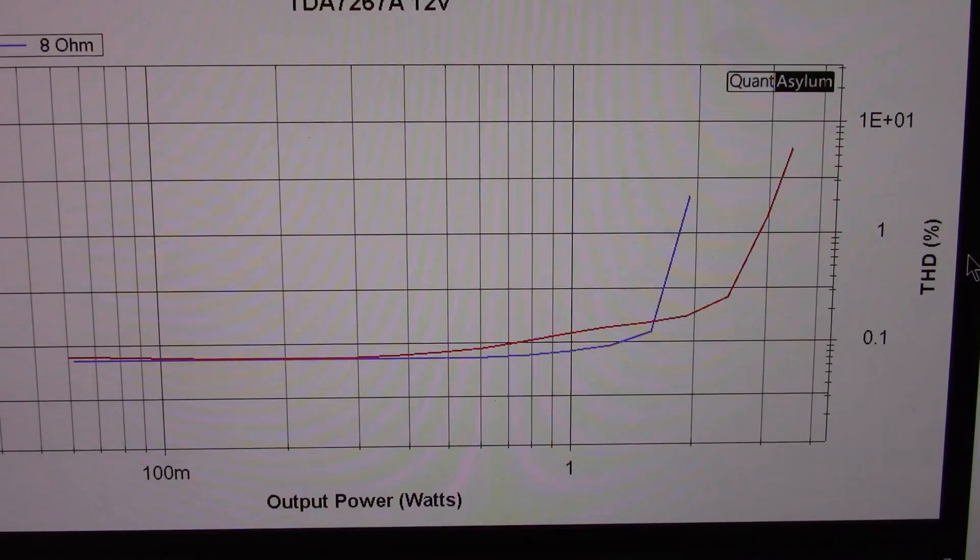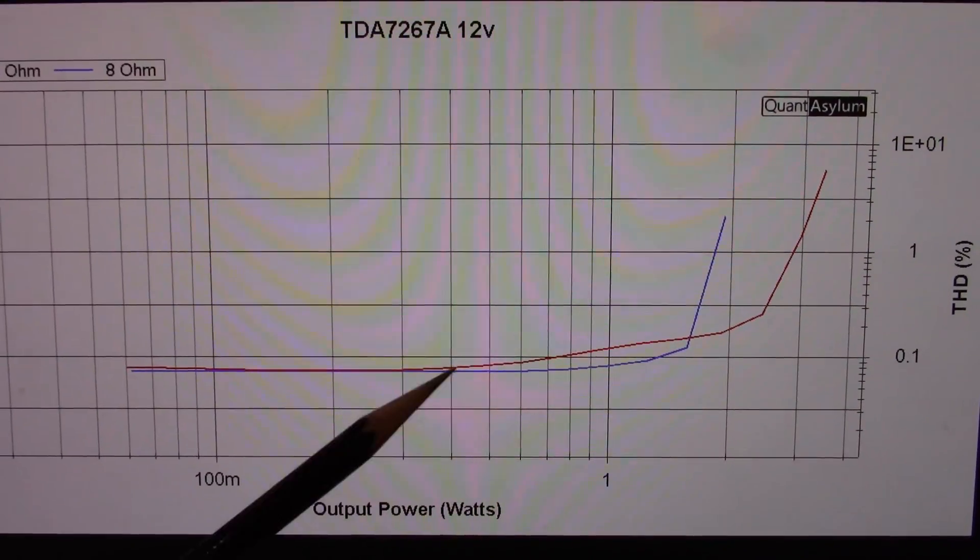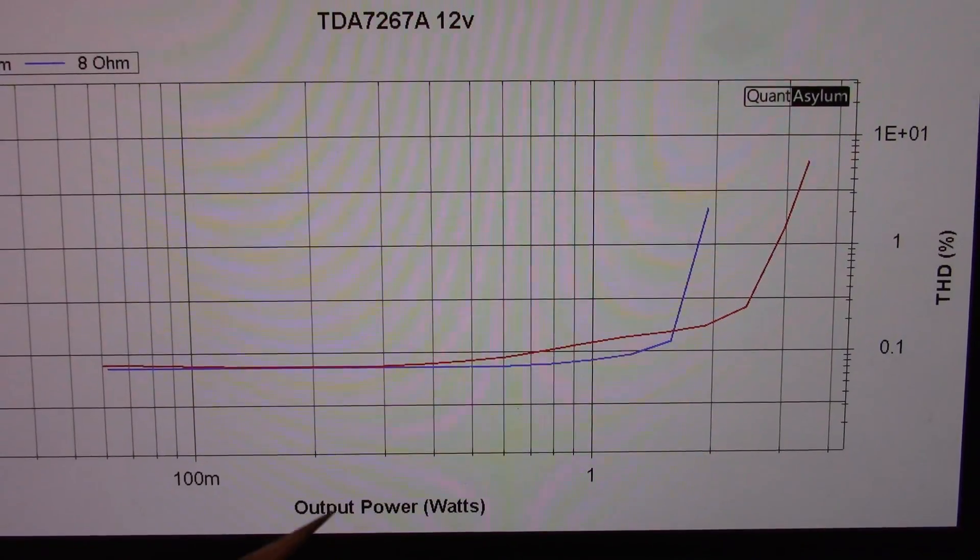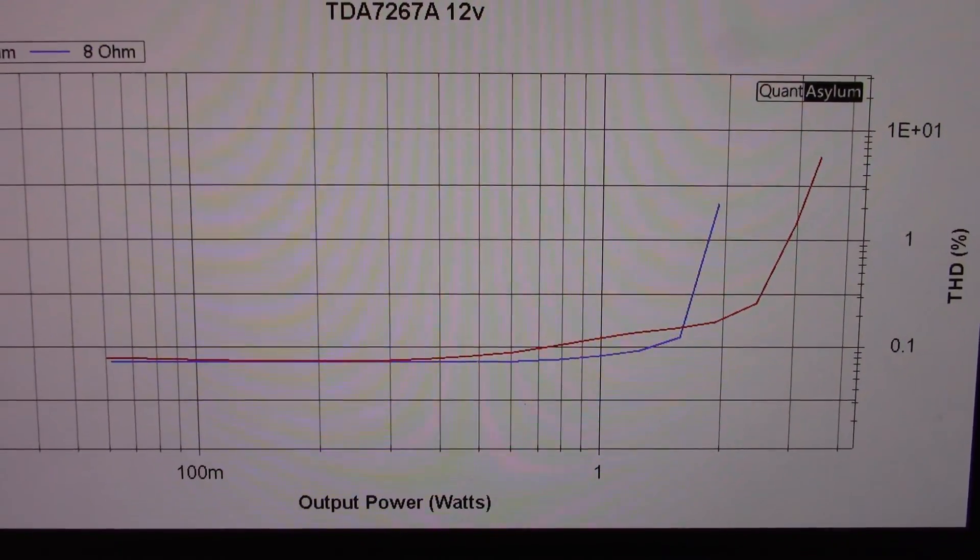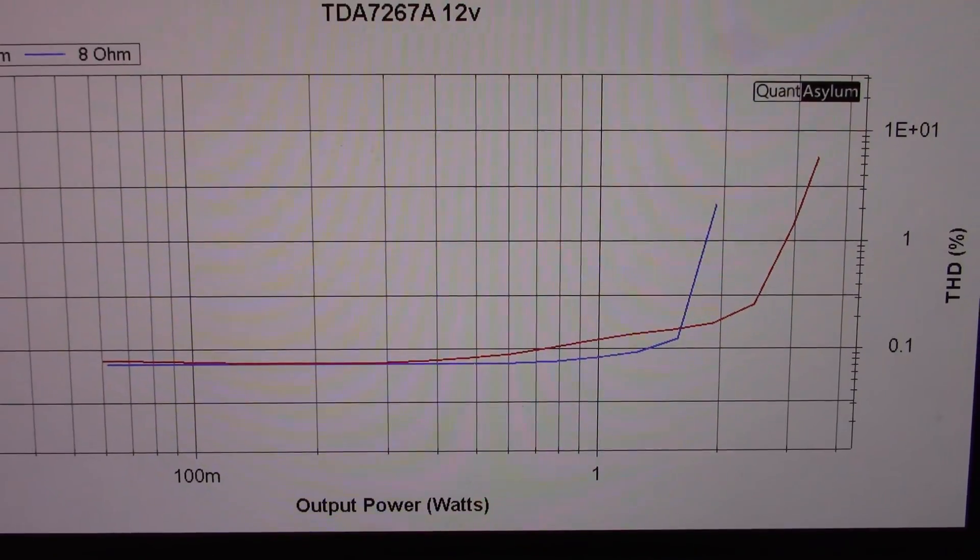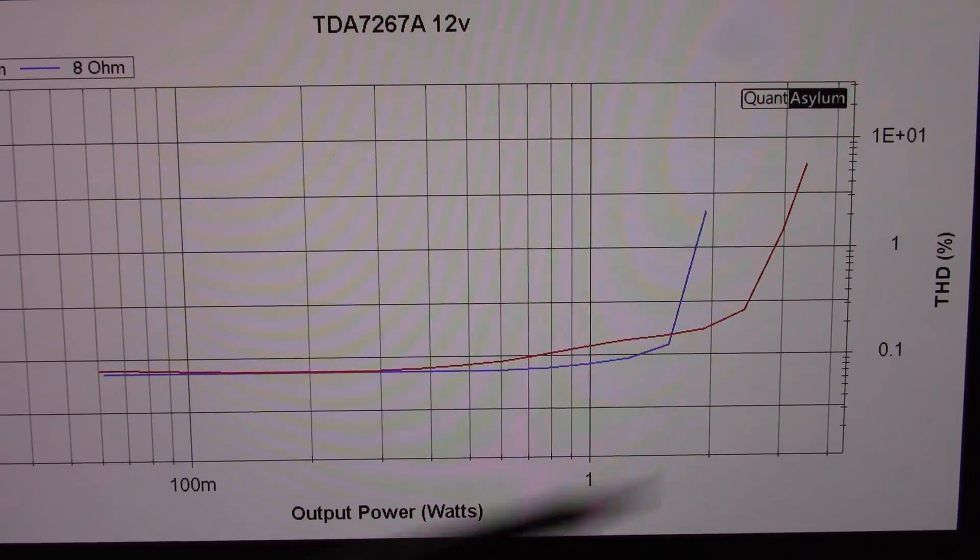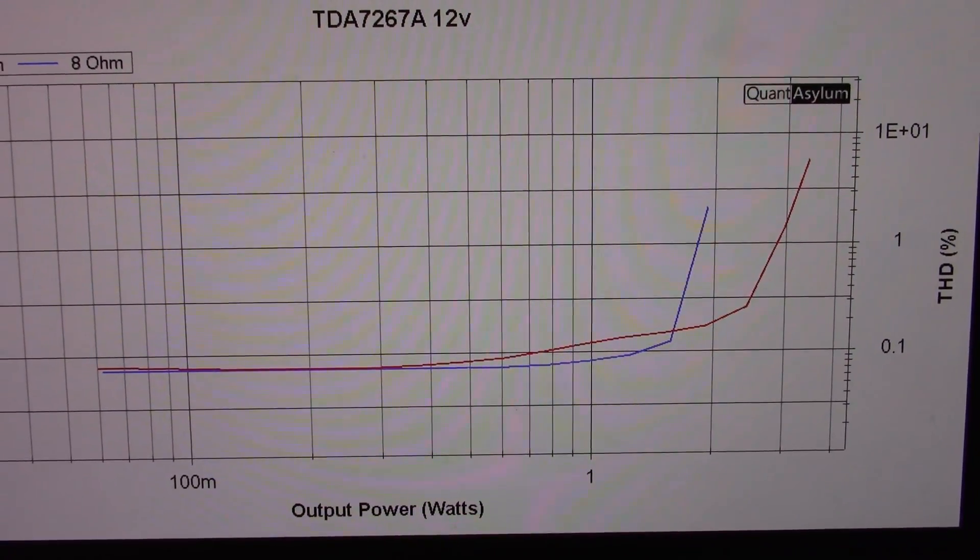And at 1%, we're getting about 2.8 watts. So not too bad at all. If you wanted to, you can increase the supply voltage of the TDA7267 to, say, 15 volts, and get about that same amount of power with an 8 ohm load.